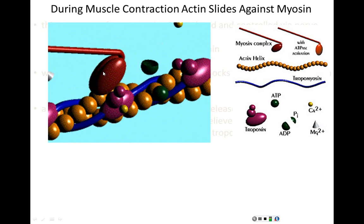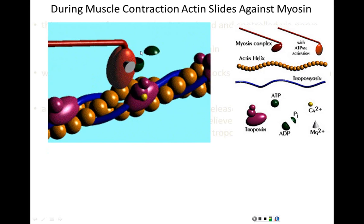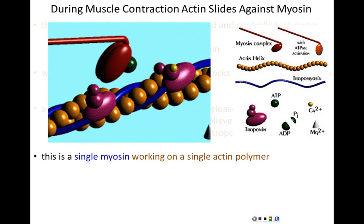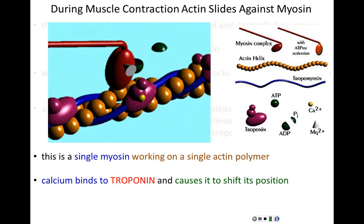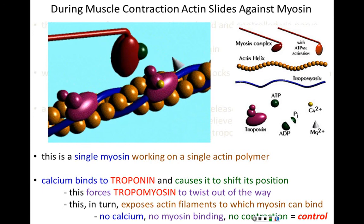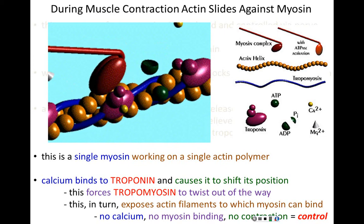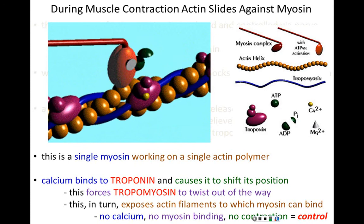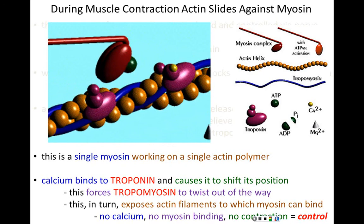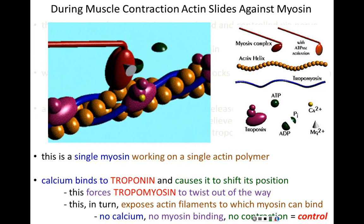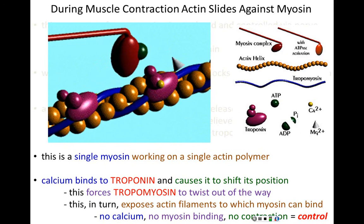What we're watching in this movie is a single myosin interacting on a single actin polymer. Calcium binds to troponin, the troponin causes a shift, it drags tropomyosin to twist out of the way, exposing free actin filaments to which myosin can bind. If there is no calcium, myosin cannot bind to the actin filament — there will be no contraction — because this is happening with hundreds and hundreds of myosin heads. If there's no contraction, there's no squeezing of the muscle fiber. The default state of a muscle fiber is not to contract, because troponin and tropomyosin are constantly inhibitory. When the signal for contraction is received — a calcium-dependent signal — we see contraction of the sarcomere.